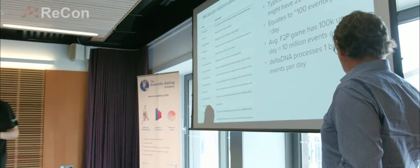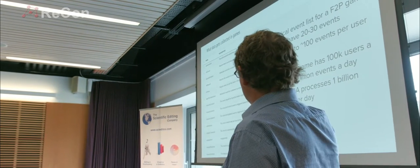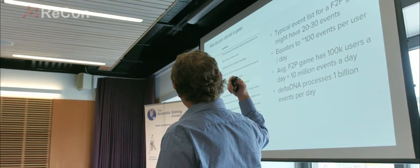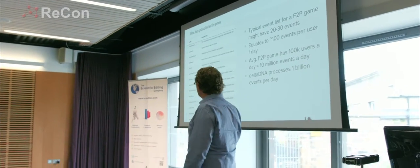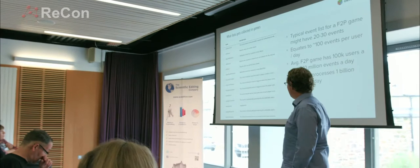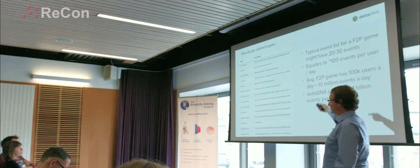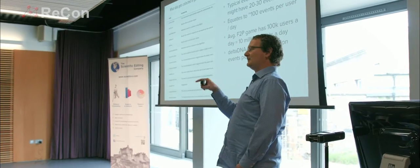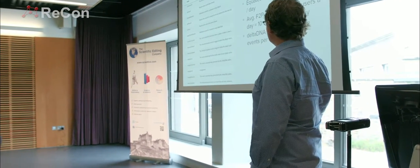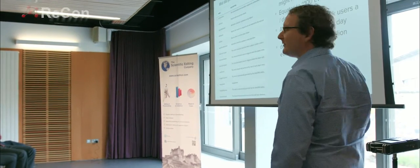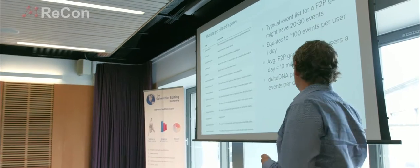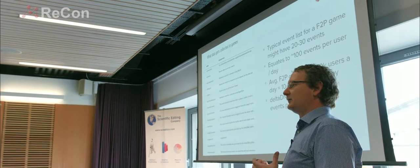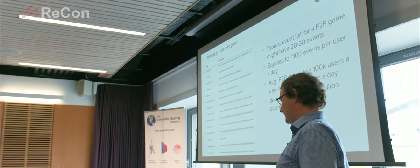To give you an idea of the kind of stuff we track: this is just a sample of an event list for a typical game. We track things like when you watch ads, how you interact with them, achievements you make, when you create characters, when you upgrade those characters, how you unlock features — and this is just the start of an alphabetical list. A typical game might have a hundred events tracked per session, which translates into tens of millions of events a day. For us, we process about a billion events a day.